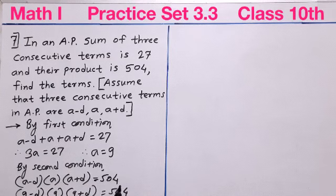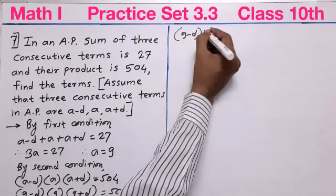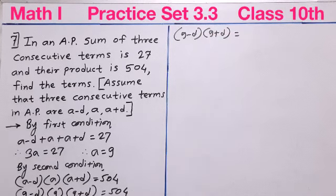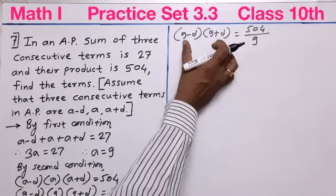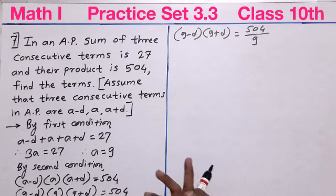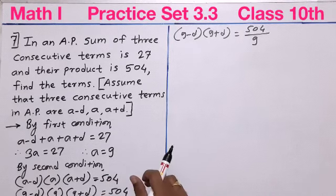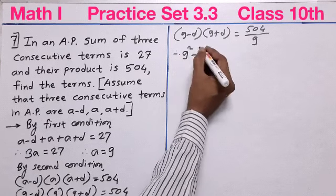Shifting 9 to the right side, it becomes division: (9 minus D)(9 plus D) = 504 upon 9. Using the identity (A plus B)(A minus B) = A squared minus B squared, we can write 9 squared minus D squared = 56, since 504 divided by 9 equals 56.